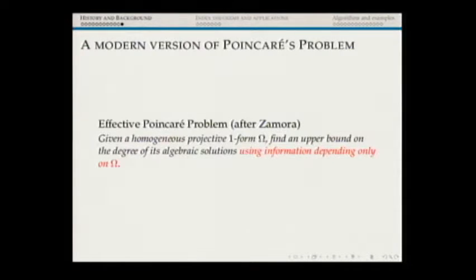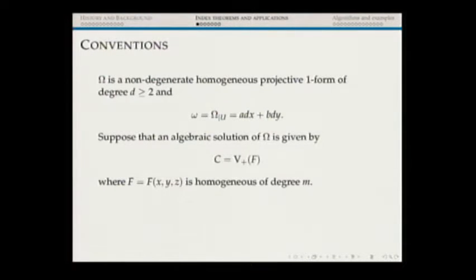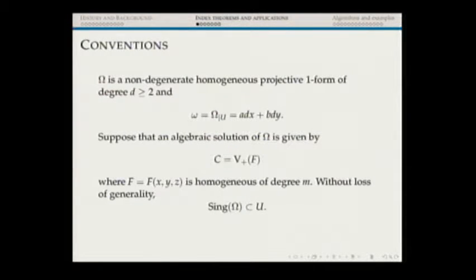Let's move on to indices and the index theorem. From now on, omega is non-degenerate, homogeneous, projective one-form. Little omega is its restriction to U = P² minus {Z=0}, written as A dx + B dy. Taking an algebraic solution C defined by a homogeneous polynomial of degree M: since omega has finitely many singularities, I can apply a projective transformation and move them all to U — this is no restriction, just a change of variables.